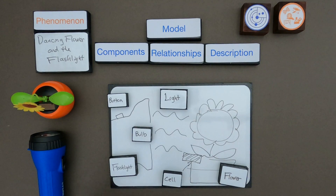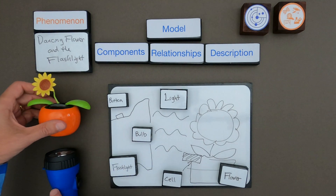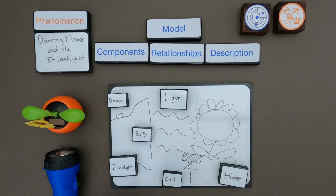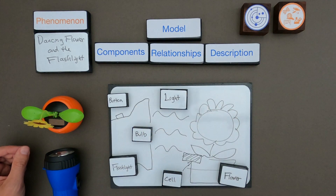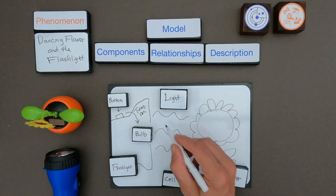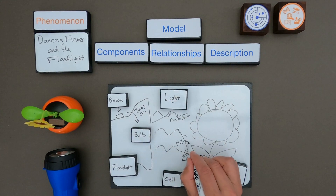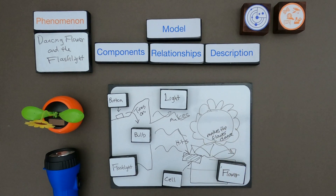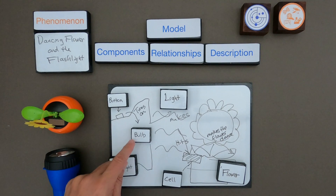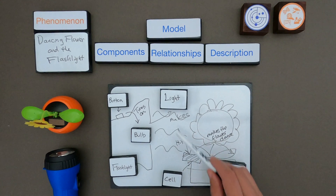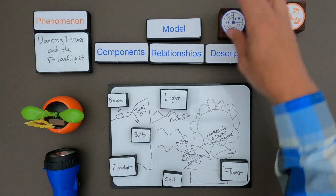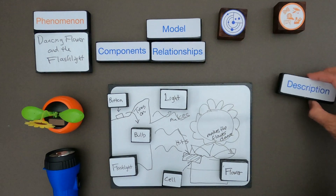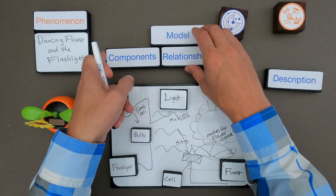Now this is the phenomena: the dancing flower and the light. I've created a model with these components: the button, the bulb, the flashlight, the solar cell, the flower, and the light. The next step is to determine the relationships - how are all these components connected? On the flashlight, I hit the button that turns on the bulb; the bulb makes light, it hits the solar cell, and that makes the flower dance. All I'm missing now is a description.